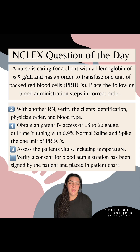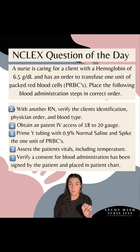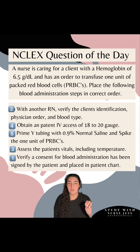Step 5 is option C, where we prime our Y tubing with 0.9% normal saline and we spike the one unit of packed red blood cells. Two things to always remember: when we administer blood, we use Y tubing — that has been asked in questions. And second, you can only administer blood products with 0.9% normal saline. They try to trick you there — don't fall for it.